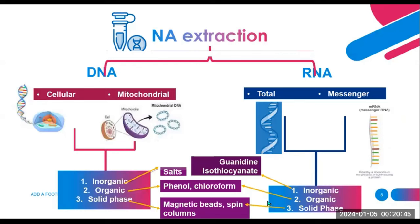When discussing nucleic acid extraction, two primary types come to mind: RNA and DNA. For DNA extraction, we focus on cellular DNA and mitochondrial DNA. Mitochondrial DNA, or mtDNA, stands out as a distinct genetic material housed in the mitochondria — the energy-generating organelles within eukaryotic cells. Unlike nuclear DNA residing in the cell nucleus, mtDNA is circular and resides in the mitochondria, playing a vital role in cellular energy production.